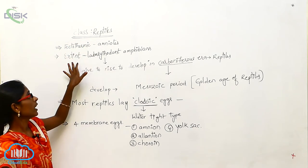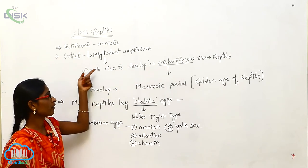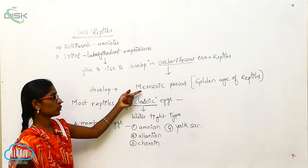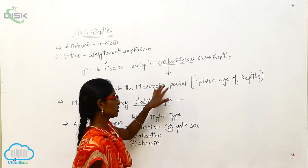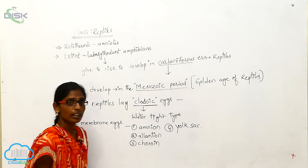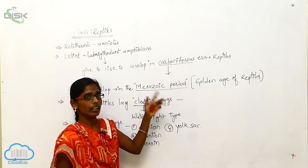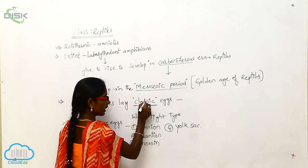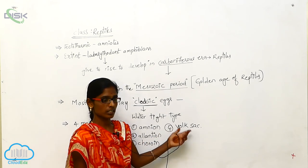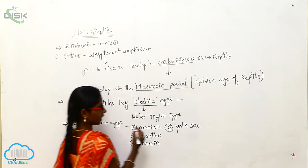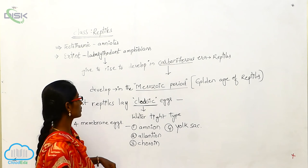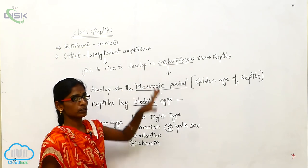Class reptiles: these are ectothermic amniotes. Extinct labyrinthodont amphibians gave rise to reptiles in the Carboniferous era. The reptiles developed in the Mesozoic period, that's why it is known as the golden age of reptiles. Most reptiles lay watertight cleidoic eggs, whose four membranes are amnion, allantois, chorion, and yolk sac. These are the general characters of class reptiles.